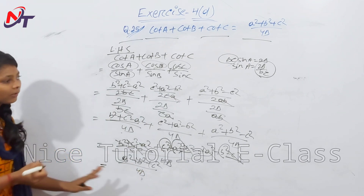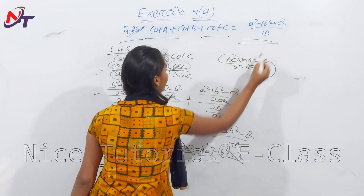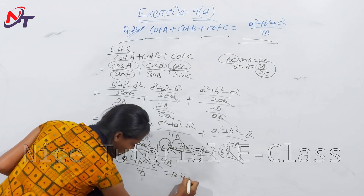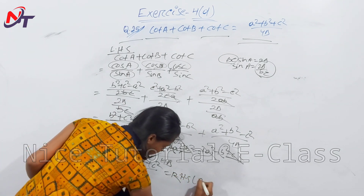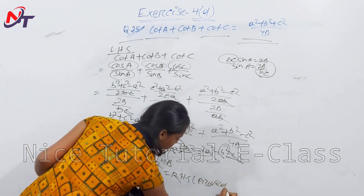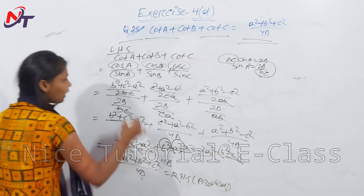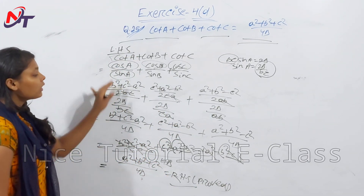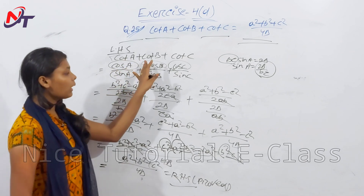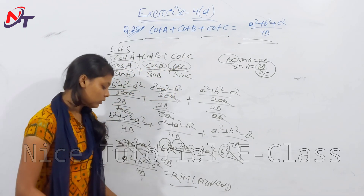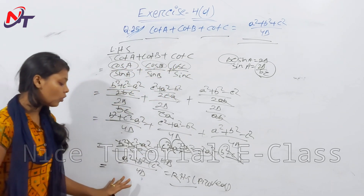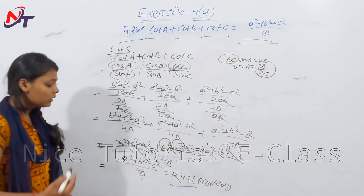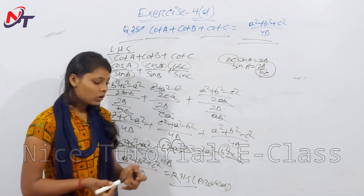The result is (a² + b² + c²)/(4Δ), which is the right-hand side. LHS equals RHS, proved. cot A + cot B + cot C = (a² + b² + c²)/(4Δ) — proved.